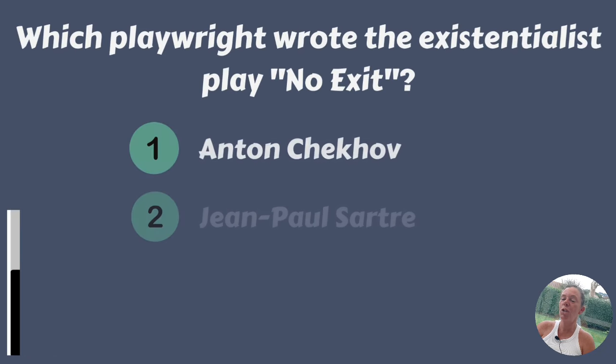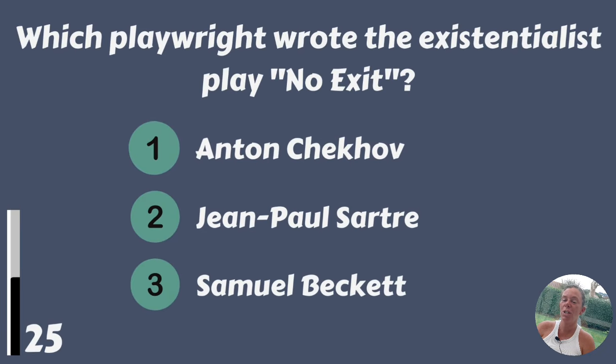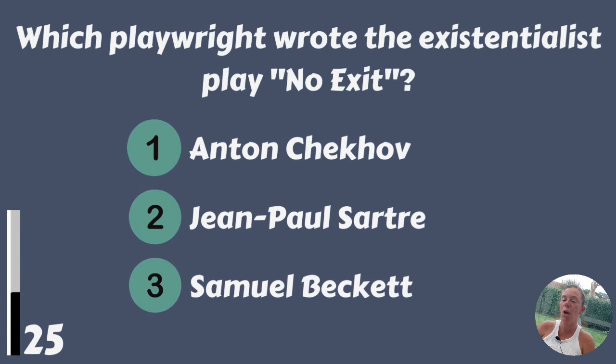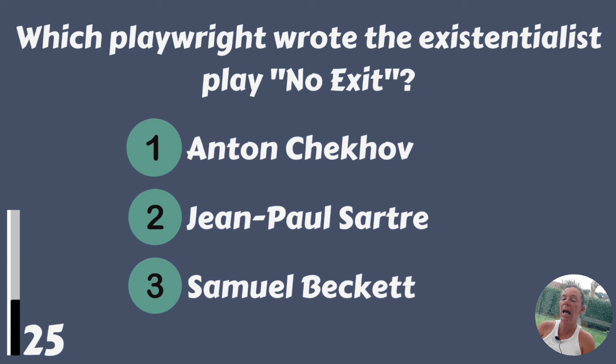Which playwright wrote the existentialist play No Exit? Anton Chekhov, Jean-Paul Sartre or Samuel Beckett?